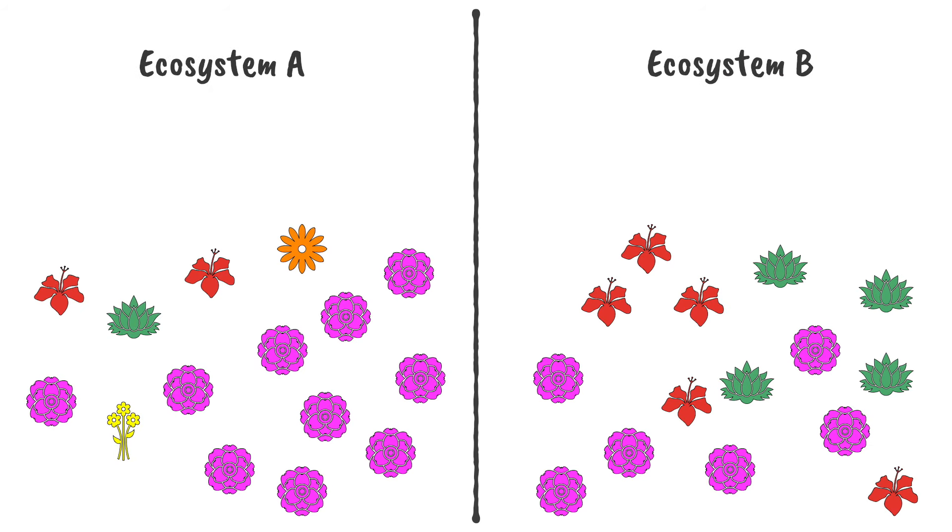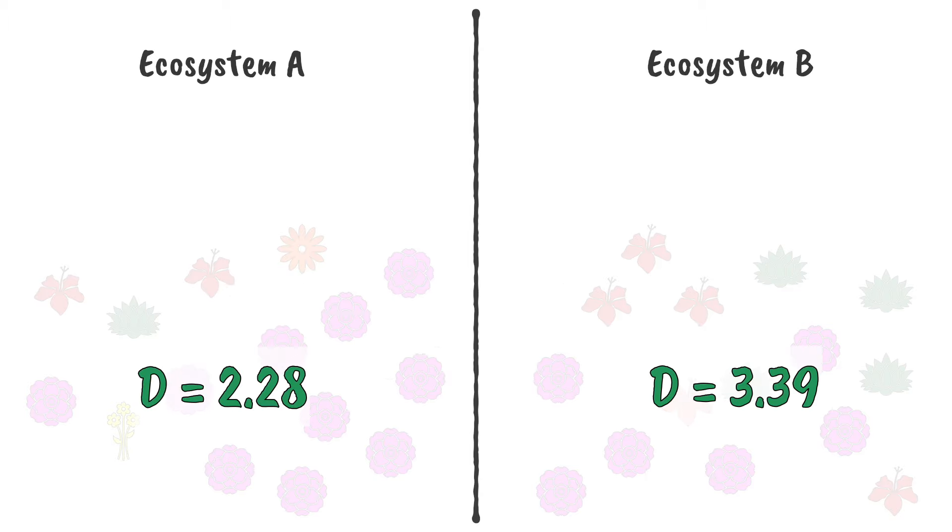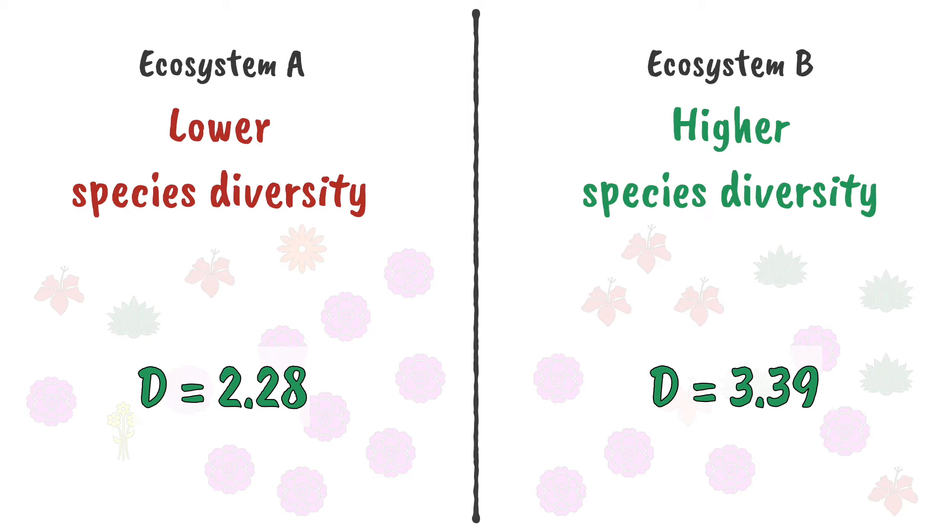If we only look at the species richness and evenness of each ecosystem, it's not immediately obvious where the biodiversity is highest. But when we use Simpson's diversity index, we can see that ecosystem B has the higher value, so it has the highest species diversity.